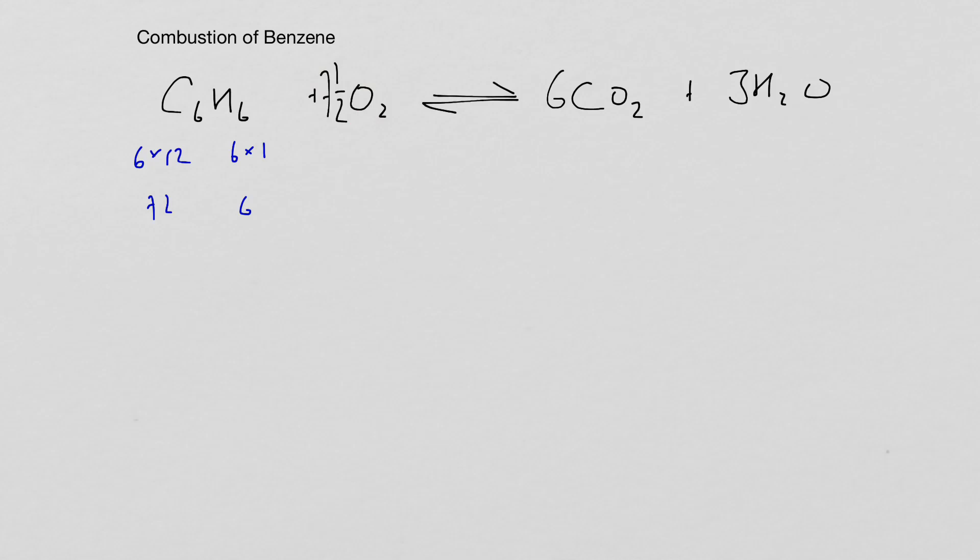So we end up having a yellow flame and sooty smoke is released. That sooty smoke is a result of some unburnt carbon being released. The yellow flame, remember, is due to the low temperature of the combustion of benzene.